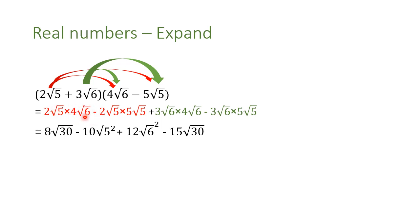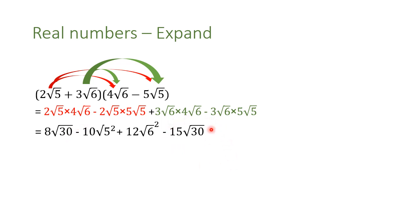So 2 times 4 gives 8 radical 30. Then the outside: minus 2 times 5 is minus 10, and radical 5 times radical 5 is radical 5 squared. Then 3 times 4 is 12 radical 6 squared, and negative 3 times 5 is negative 15 radical 30. The square gets rid of the radical.